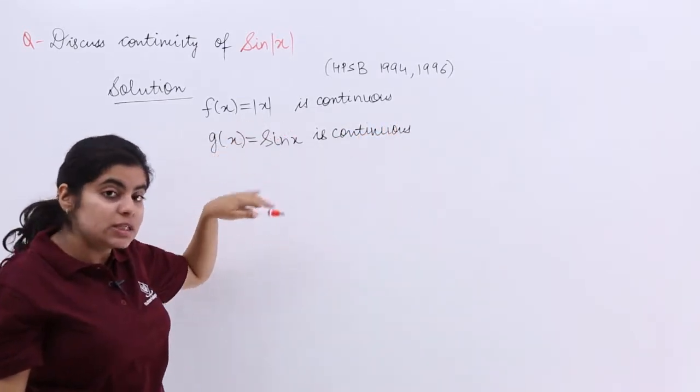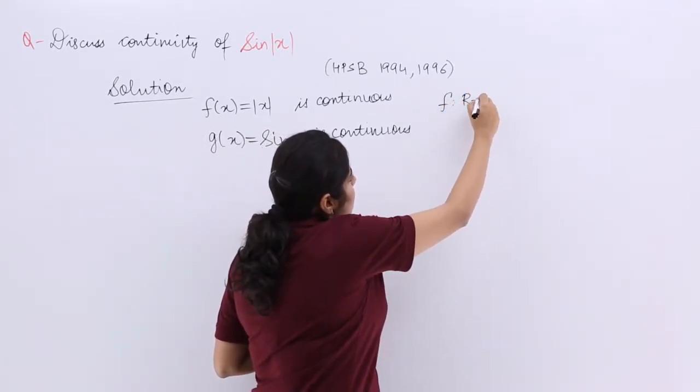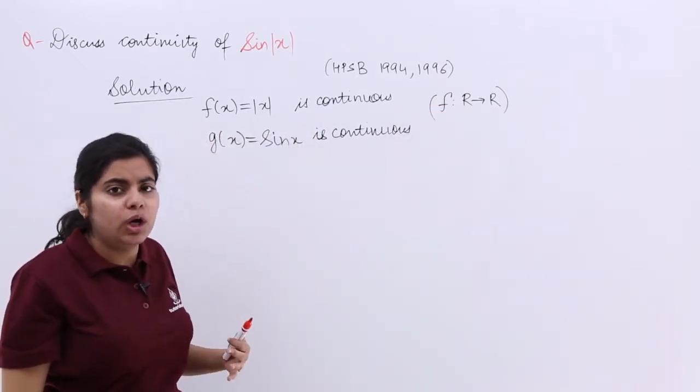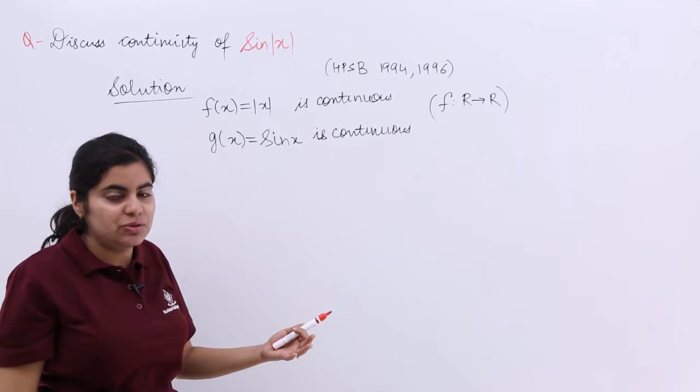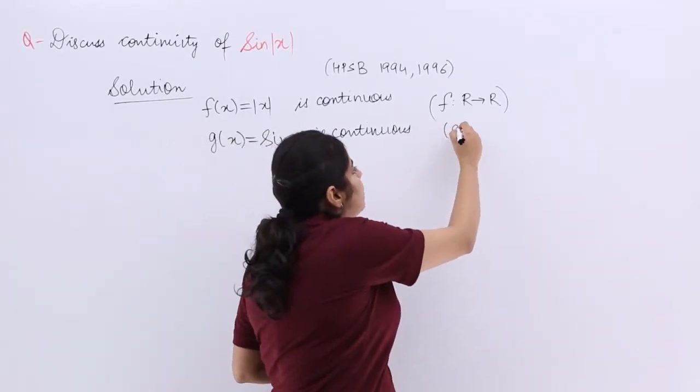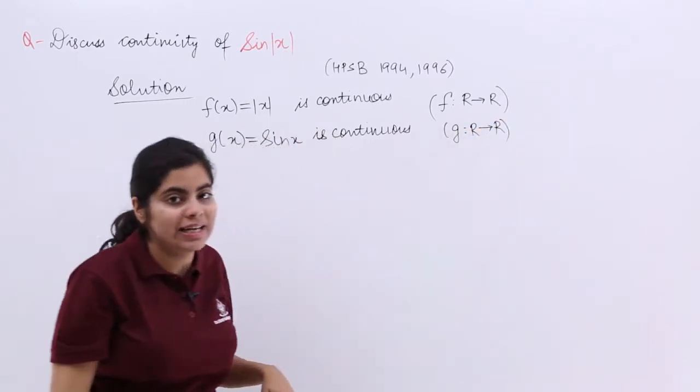Now, |x| is a function with both domain and range as real numbers, because you can put anything in modulus and you always get real values. Even sin x is such a function where you can put any real values and expect a real value as the answer.